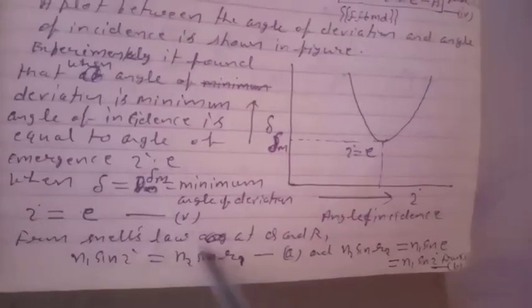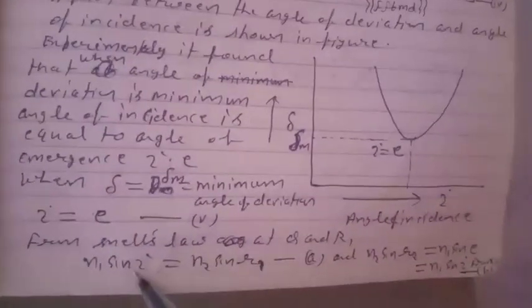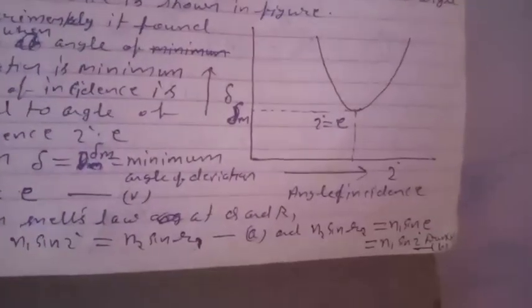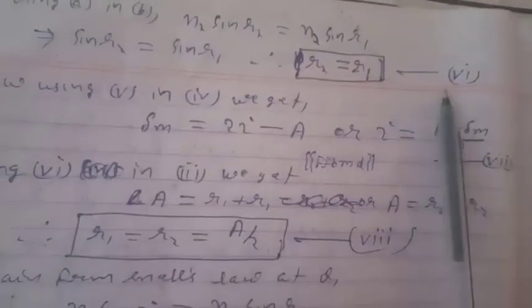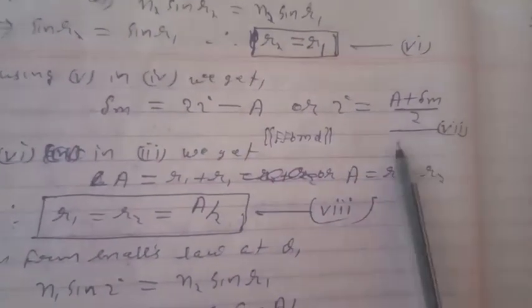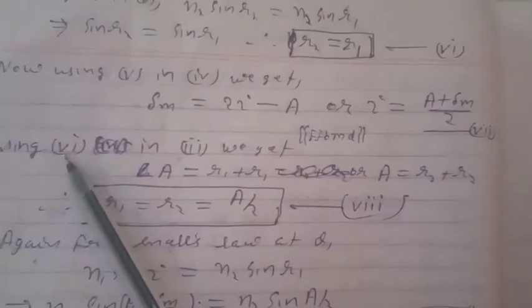From Snell's law at Q and R: N1 sin(I) = N2 sin(R1), and N2 sin(R2) = N1 sin(E) = N1 sin(I). This gives sin(R2) = sin(R1), hence R2 = R1. Using this, delta_M = 2I minus A, so I = (A + delta_M)/2. Also, A = R1 + R2 = 2R1, hence R1 = R2 = A/2.